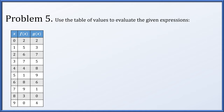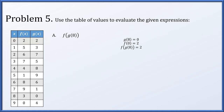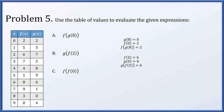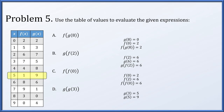In Problem 5, we have a table of values and evaluate compositions. f(g(8)): g(8) = 0, then f(0) = 2, so f(g(8)) = 2. For g(f(2)): f(2) = 6, then g(6) = 6, so g(f(2)) = 6. For f(f(0)): f(0) = 2, then f(2) = 6, so f(f(0)) = 6. For g(g(3)): g(3) = 5, then g(5) = 9, so g(g(3)) = 9.